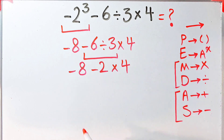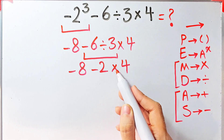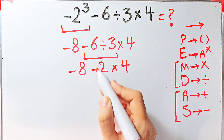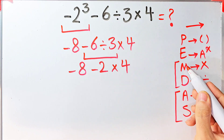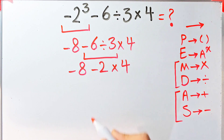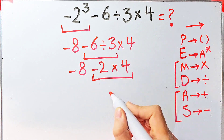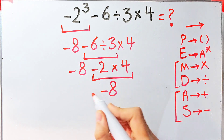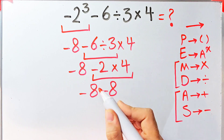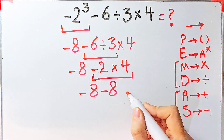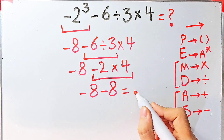Now we have subtraction and multiplication. First we simplify the multiplication, because multiplication has higher priority than subtraction. Negative two times four equals negative eight. Now we have negative eight minus eight, which equals negative sixteen.